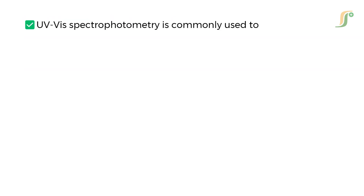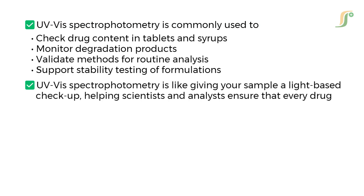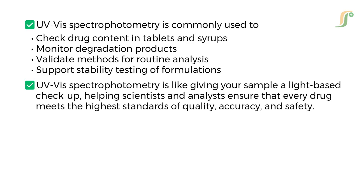In pharmaceutical quality control, UV-visible spectrophotometry is commonly used to check drug content in tablets and syrups, monitor degradation products, validate methods for routine analysis, and support stability testing of formulations. It is a non-destructive, fast, and cost-effective method, which makes it highly reliable for day-to-day lab analysis. In short, UV-visible spectrophotometry is like giving your sample a light-based checkup, helping scientists and analysts ensure that every drug meets the highest standards of quality, accuracy, and safety.